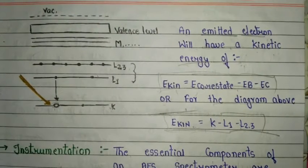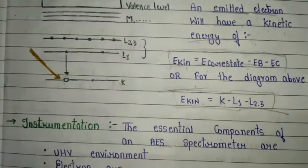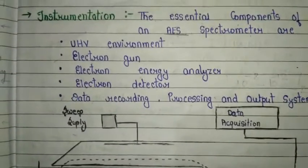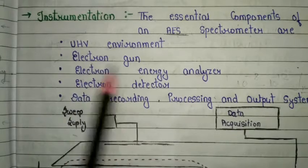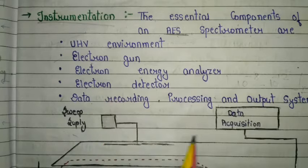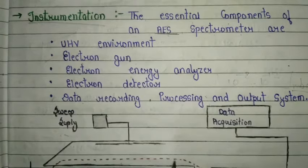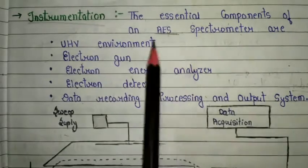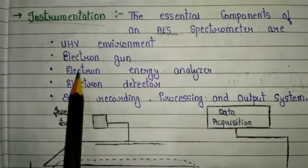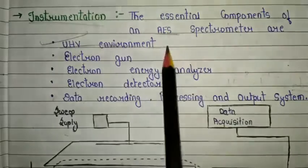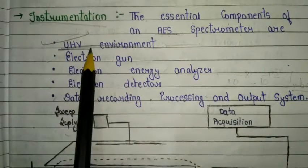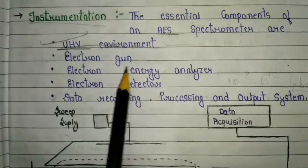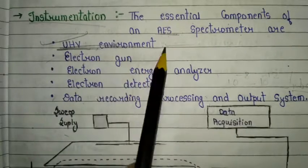Those are the important points and the principle of Auger electron spectroscopy. Now let's discuss the instrumentation. We need to know the essential components of the AES spectrometer. The instrumentation process itself is not very important; we mainly need to know the essential components. The first essential component is the UHV environment — Ultra High Vacuum — which is very important in this instrumentation.